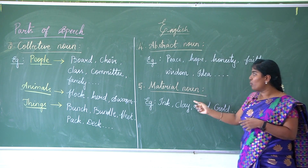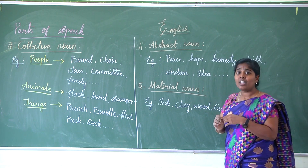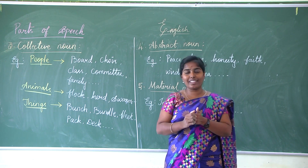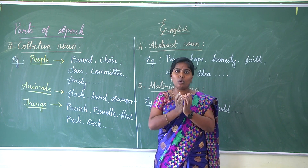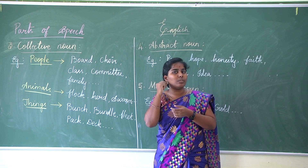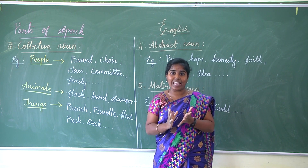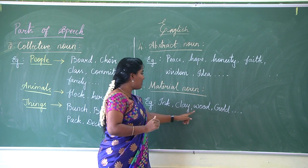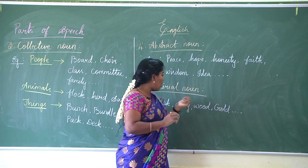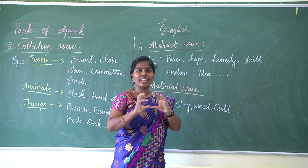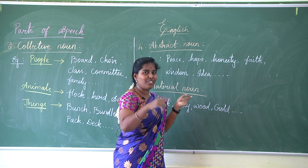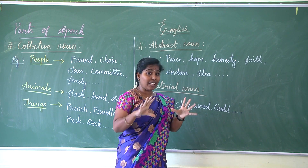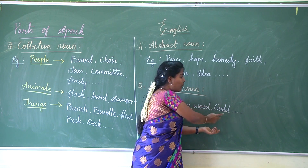Next, material noun. Material noun is a thing which can be used to create another thing. For example, gold — it can be used for making ornaments, anklets, and many things. Other examples are ink, clay, wood, gold. Using clay, we can make a pot or a doll. Using wood, we can make furniture. These are all material nouns.